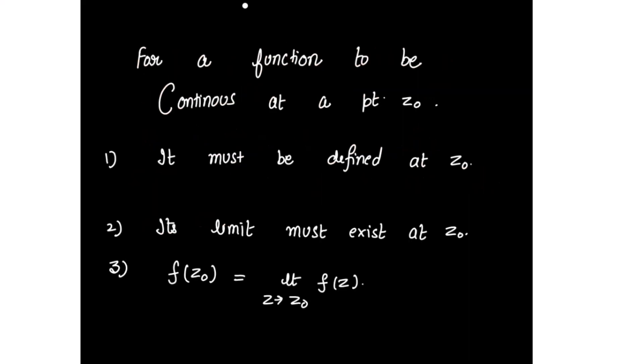For a function to be continuous at a point z₀, it must be defined at z₀, the limit must exist at z₀, and third, f(z₀) should be equal to the limit as z tends to z₀ of f(z).